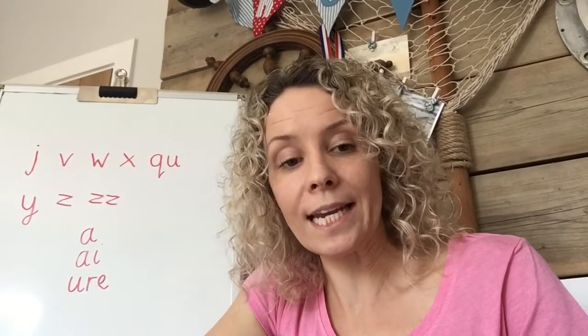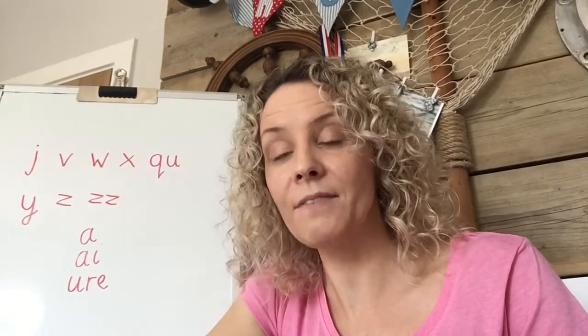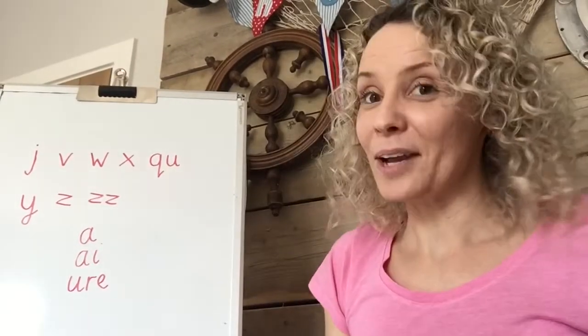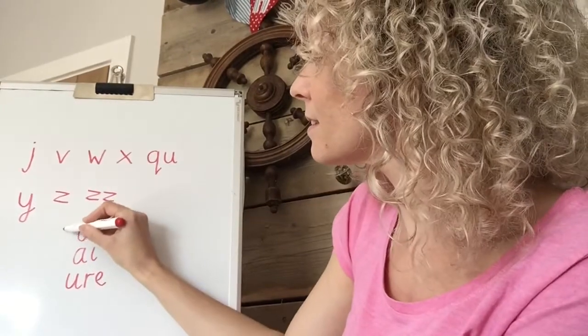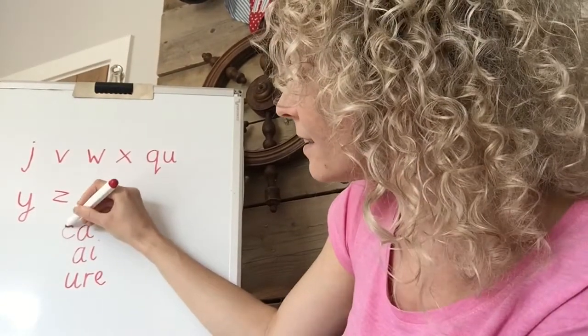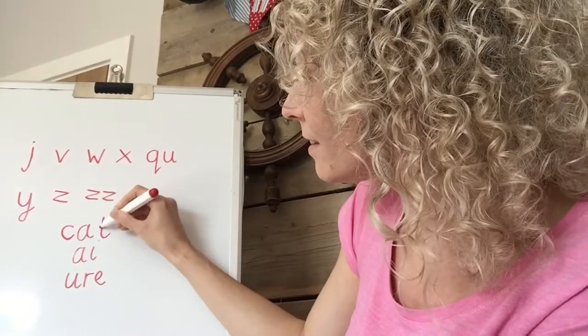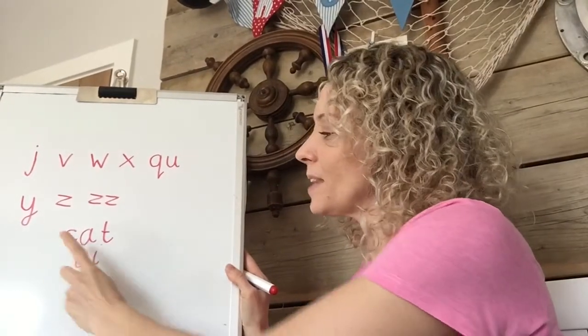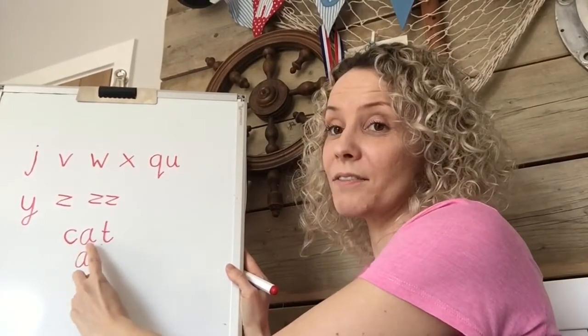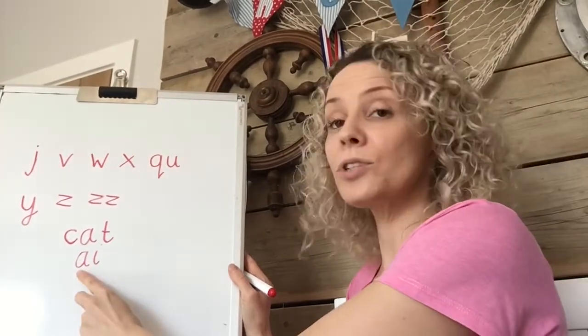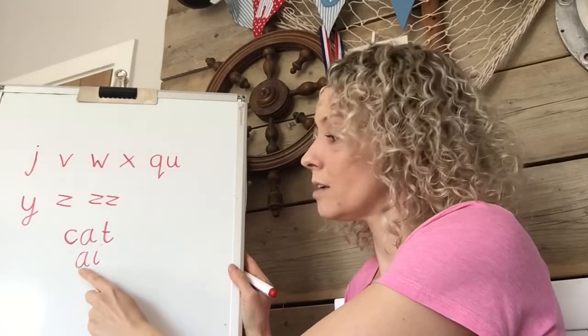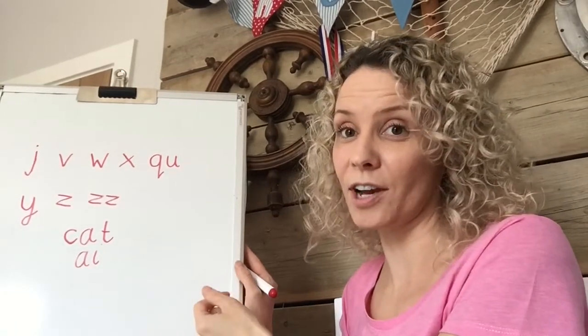So they'll be able to blend and to read CVC words. CVC means consonant, vowel, consonant — just like on the Countdown game. I'm going to write a CVC word using 'cat.' So cat — we've got the consonant, the vowel, and the consonant. I can also write a CVC word with 'ai' because it's a vowel digraph.